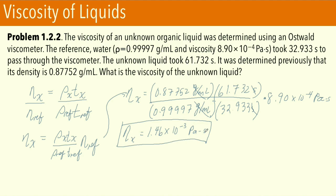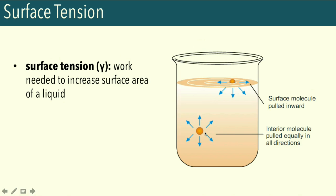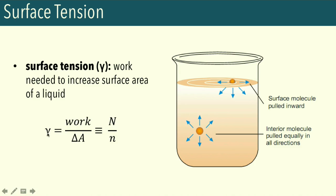That is the viscosity of a liquid. There are other ways to measure liquid viscosity, such as Stokes' law, but we'll limit our discussion to Poiseuille's equation. Our next property is surface tension. Surface tension results from uneven forces acting on the surface of a liquid. Formally, it can be defined as the work needed to increase the surface area of a liquid — so its units are work per change in surface area, which gives Newton per meter.